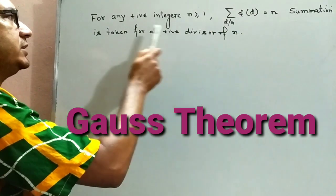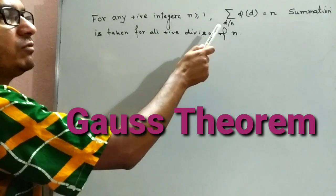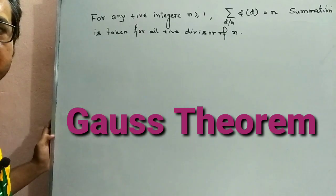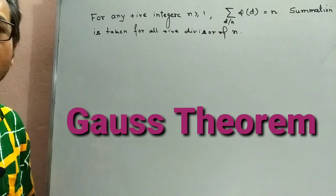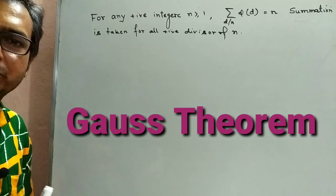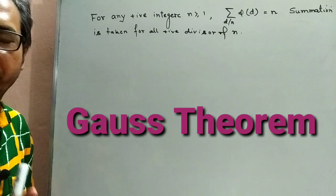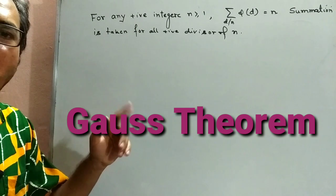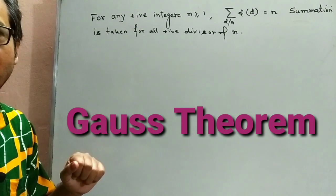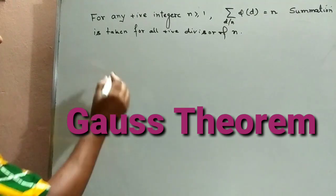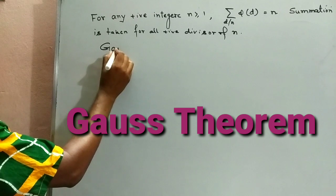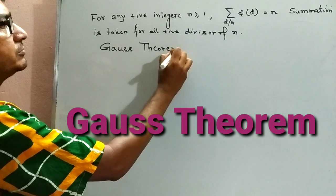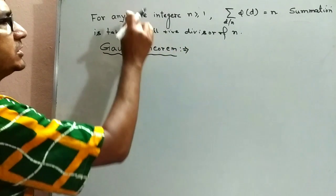Where the summation is taken for all positive divisors of n. d is all positive divisors of n. This property was first noticed by mathematician Gauss, so this property is also called Gauss's theorem in number theory.